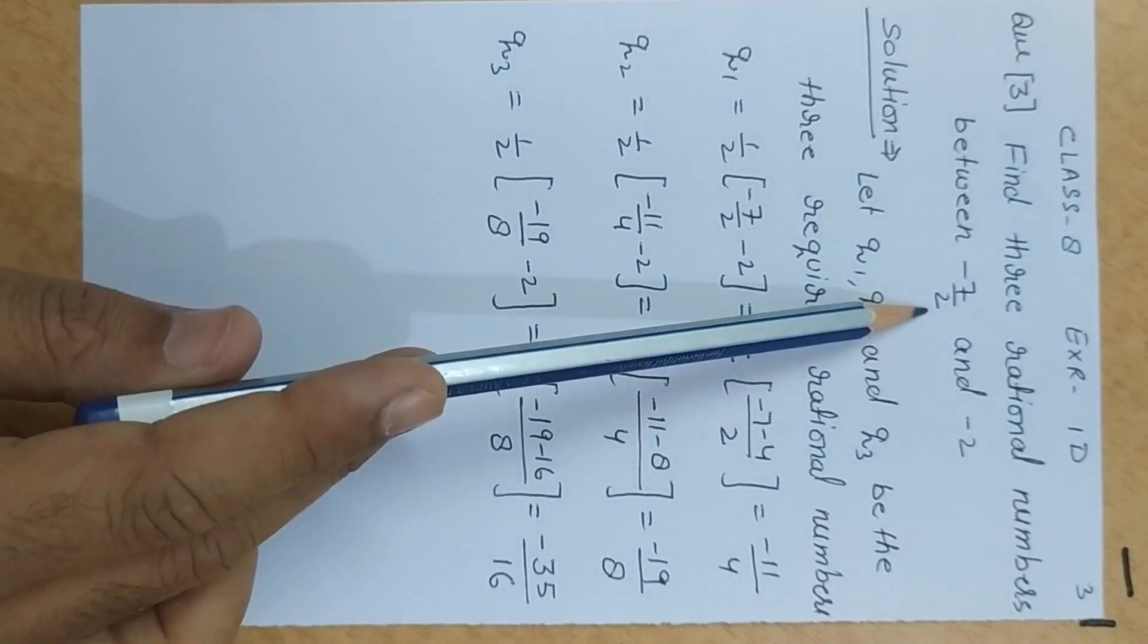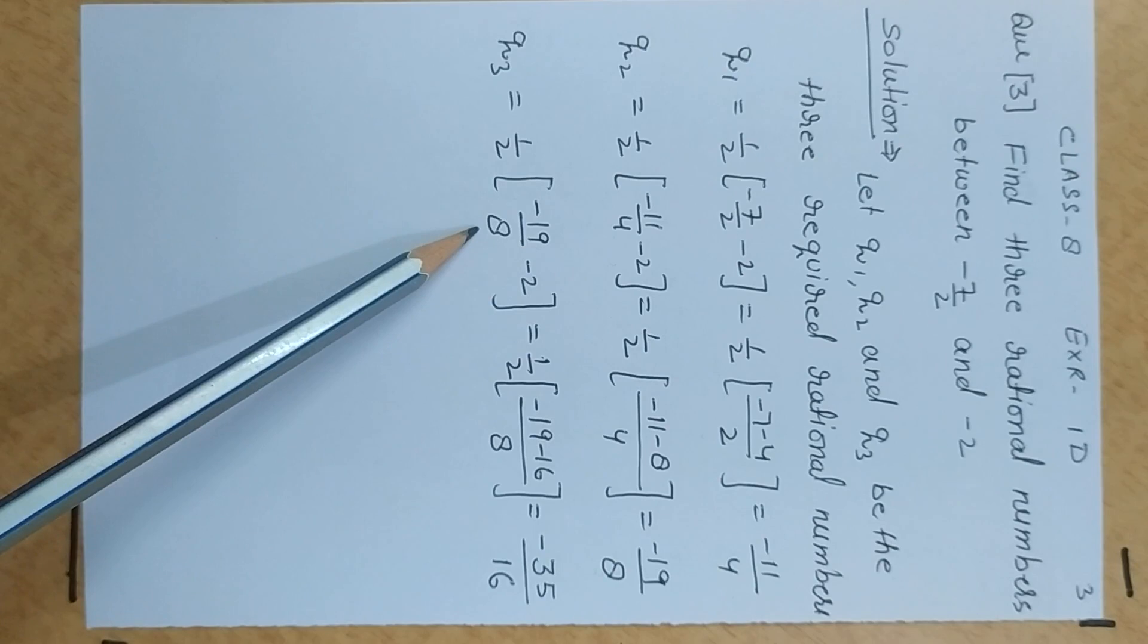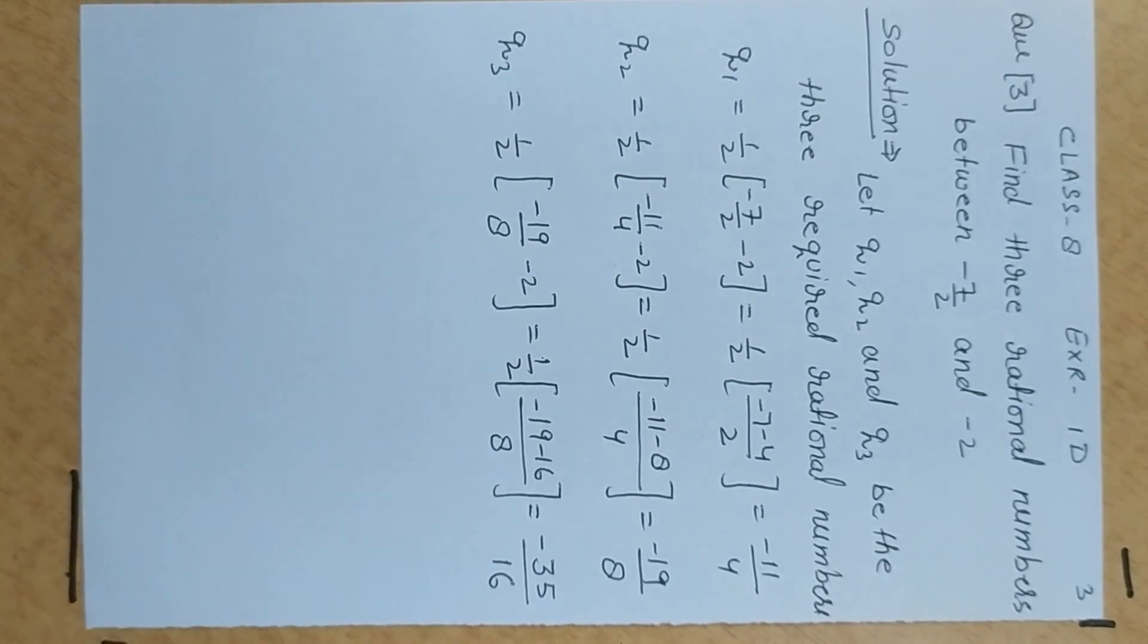Now, this number we can take again: 19 upon 8 minus 2. This is the result we can get. You can try and get the number. You can discuss any problem or questions.